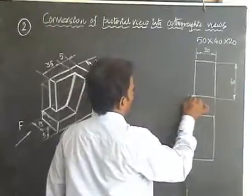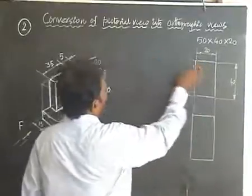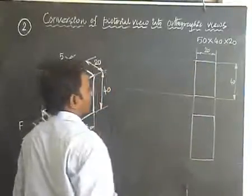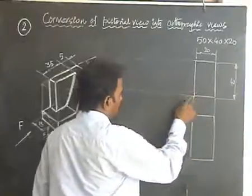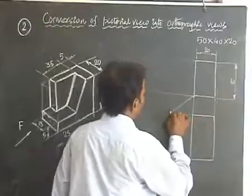With the help of projection lines from the front view, the same 40 can be available in the side view. Use 45 degree line. Bring the top view length to the side view.